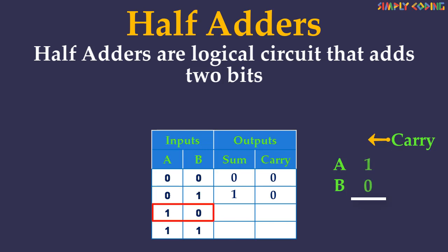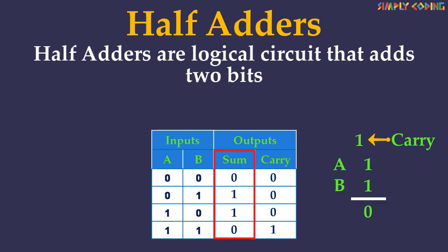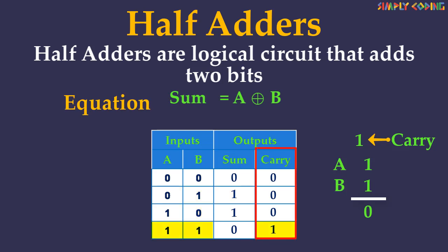When we add 1 and 0, the sum is 1 only and carry is 0. When we add 1 with 1, the sum is 2, which is nothing but binary number 10, where 0 is the sum and 1 is carry. So this is the truth table for half adder. If you look at the output of sum and carry, you will see that sum is 1 only when A and B are different. So it is nothing but A XOR B, and carry is 1 when both A and B are 1, so it is nothing but A AND B.